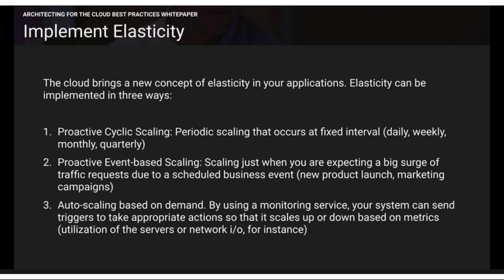Regarding elasticity, there are three different types of auto scaling. First is proactive cyclic scaling, second is proactive event-based scaling, and third is auto scaling based on demand. Auto scaling based on demand is what we have already learned. In proactive cyclic scaling, you know that every day at a certain time — say 9 o'clock — a game is conducted for thousands of people requiring a lot of extra infrastructure for that specific period.